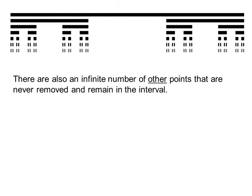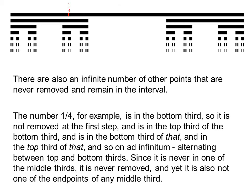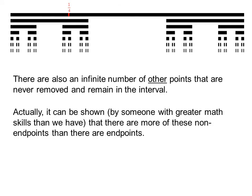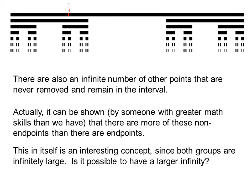There are also an infinite number of other points that are never removed and remain in the interval. The number one-fourth, for example, is in the bottom third, so it is not removed at the first step, and it is in the top third of the bottom third, and in the bottom third of that, and the top third of that, and so on ad infinitum, alternating between top and bottom thirds. Since it is never in one of the middle thirds, it is never removed, and yet it is also not one of the endpoints of any middle third. It can be shown that there are more of these non-endpoints than there are endpoints. This in itself is an interesting concept since both groups are infinitely large — is it possible to have a larger infinity?